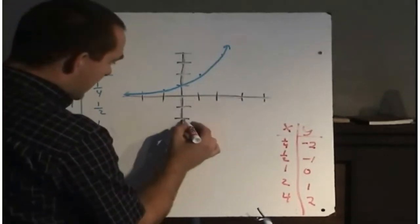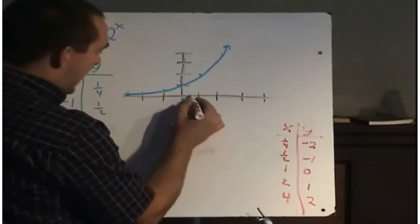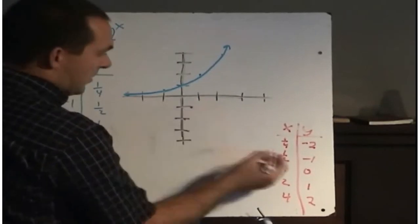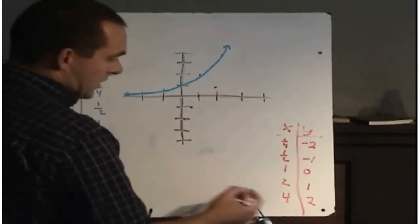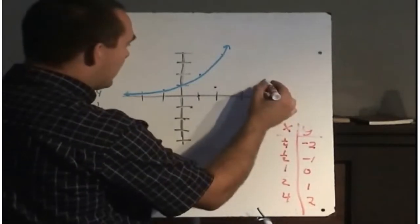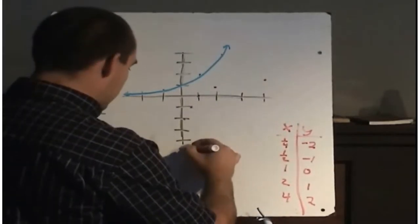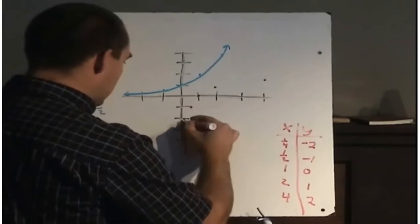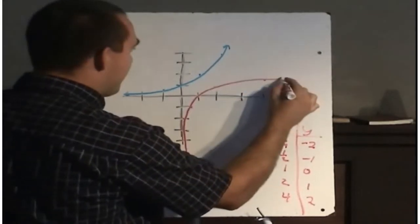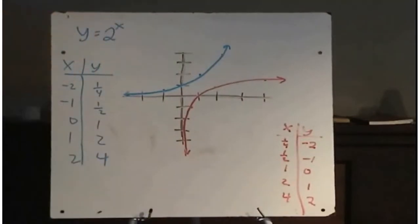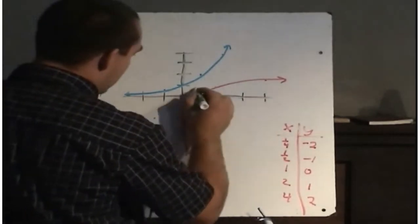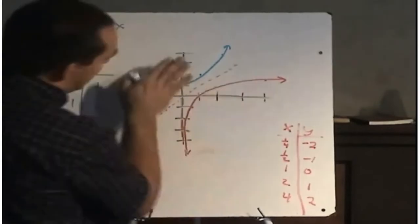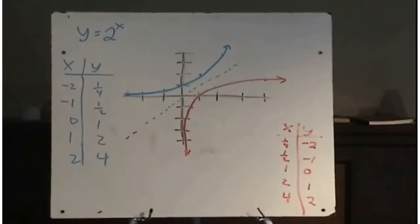So when x is a quarter, y is minus 2; when x is a half, y is minus 1; when x is 1, y is 0; when x is 2, y is 1; and when x is 4, y is 2. Connecting the dots, our graph would look something like that. And remember, another way of looking at it is that when we draw the diagonal line y equals x, they should be reflections about that line. So the red graph would definitely represent the inverse of y equals 2 to the x.